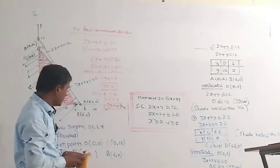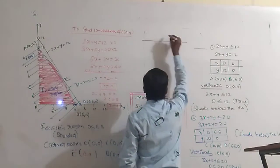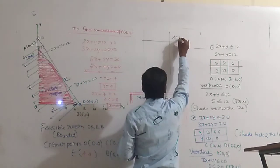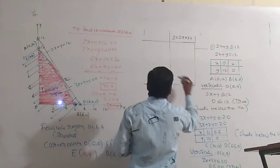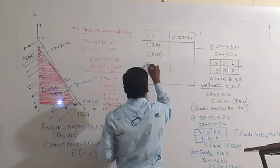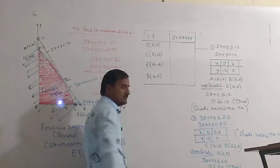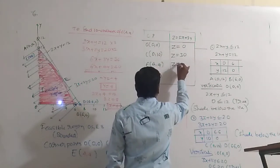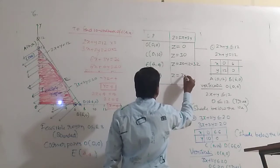Now we have the coordinates of all corner points. We make a table with the objective function Z = 5x + 3y. Corner points: O(0,0): Z = 0; C(0,10): Z = 30; E(4,4): Z = 20 + 12 = 32; B(6,0): Z = 30.